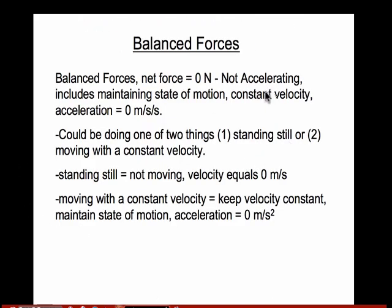First of all, we either have forces that are balanced or forces that are unbalanced — one of two things. If the forces are balanced, which means all the arrows in opposite directions look the same, then the net force is zero newtons. Newtons is the metric unit for force, named after Sir Isaac Newton. If the forces are balanced, then the object is not accelerating — it's maintaining its state of motion, it has a constant velocity, and its acceleration is zero meters per second squared.